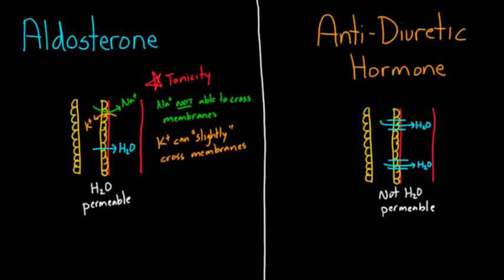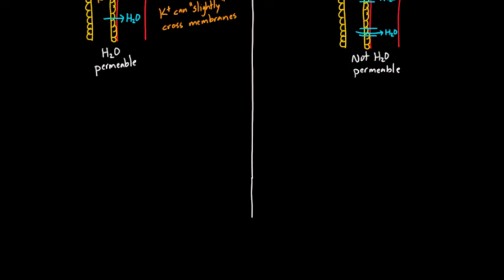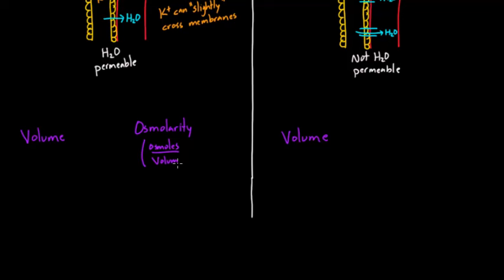Let me create two categories. One category is volume and the other is osmolarity. We know osmolarity is simply a fraction — it's just osmols divided by volume. I'm going to set up that same framework for both aldosterone and ADH.